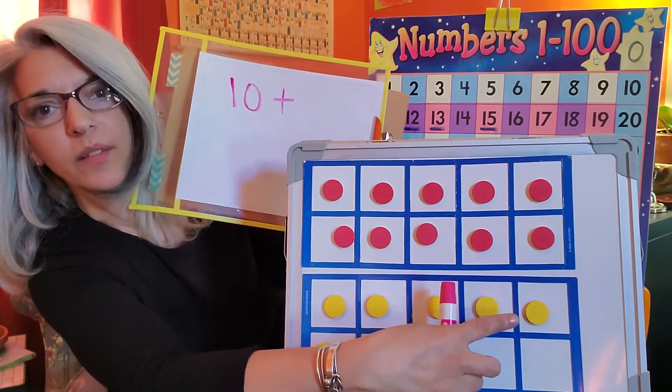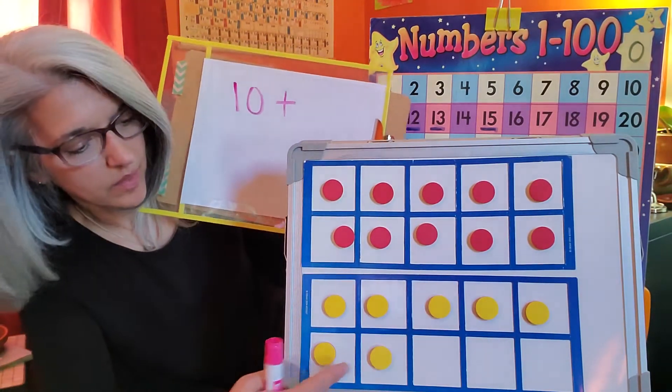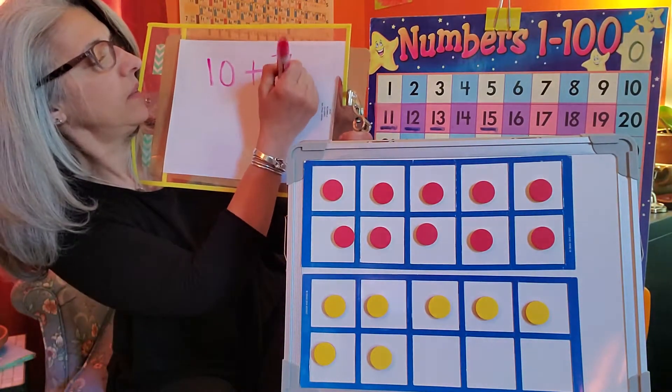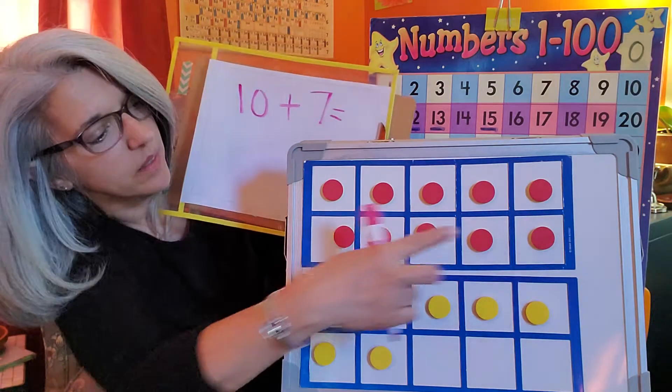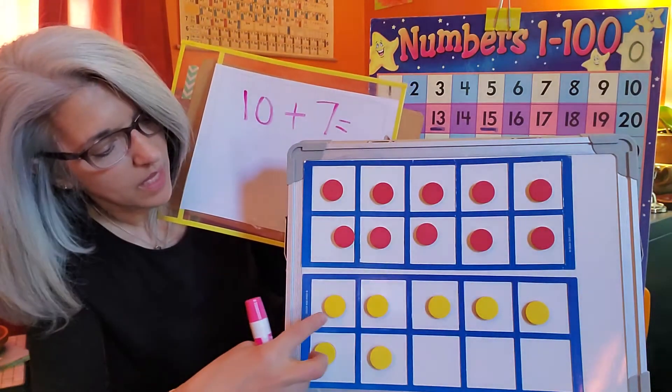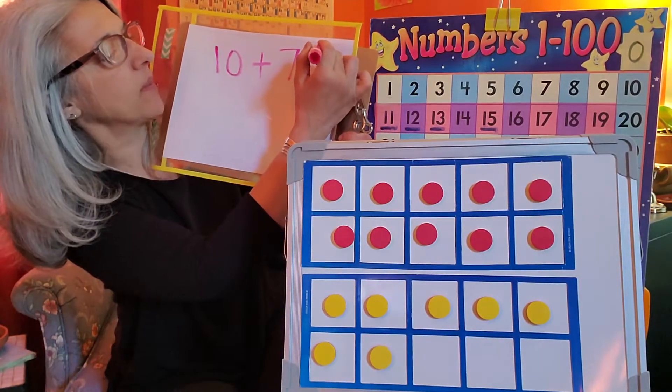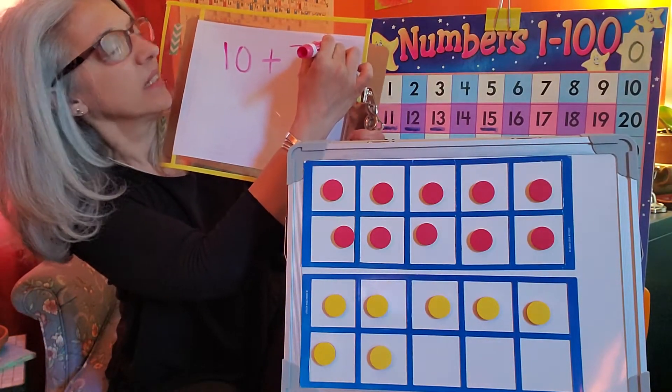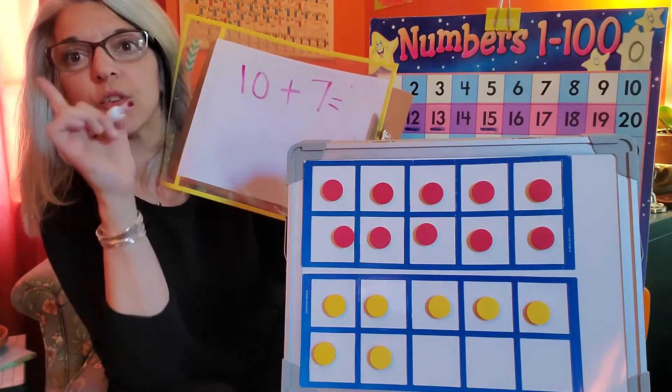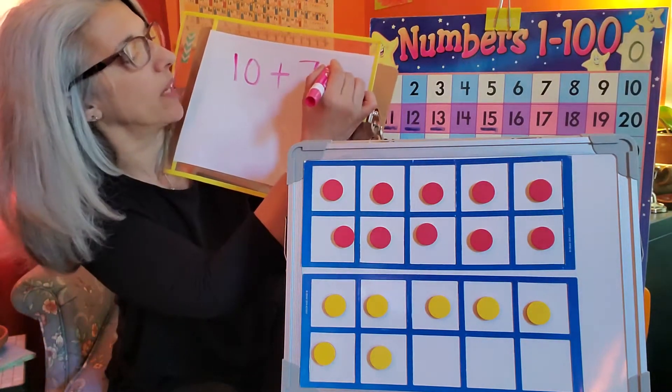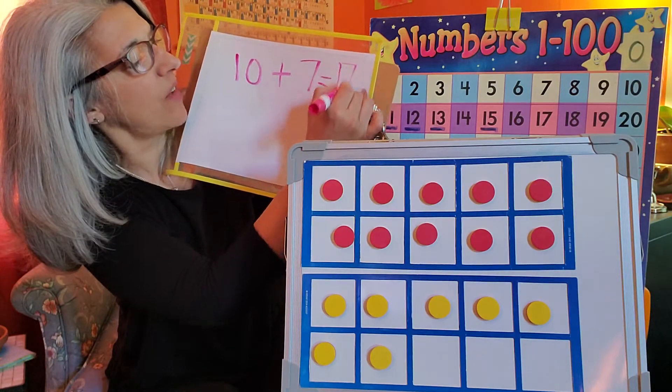We know we have five going across here so that's five, six, seven. So ten plus seven equals what? So we can do this: ten, eleven, twelve, thirteen, fourteen, fifteen, sixteen, seventeen. And remember the seventeen, even though you hear seven first, remember the teen goes first, the one. So one seven, seventeen.